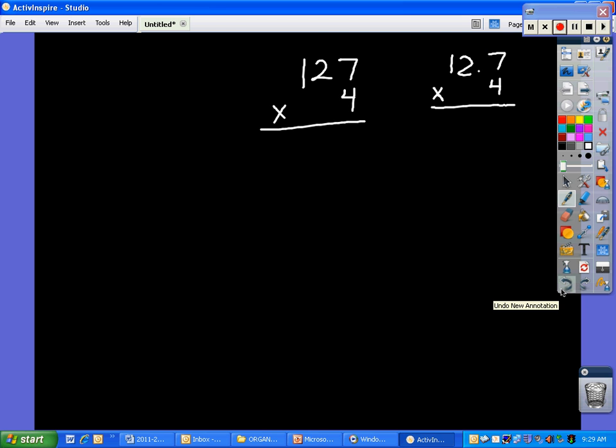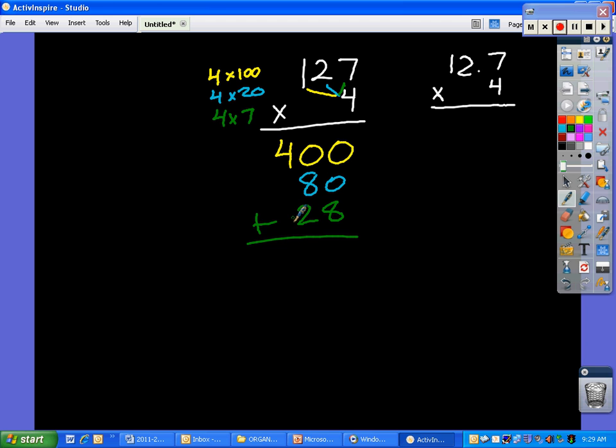So let's just take a look at this one. We have 4 times 100, and that's going to equal 400. We have 20 times 4, which is going to equal 80. And the last one is we have 4 times 7, which is going to give us 28. Simply add it up. I have an 8 here, 0, carry the 1.